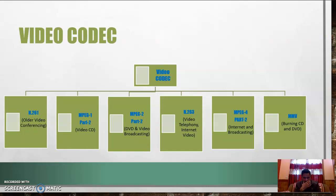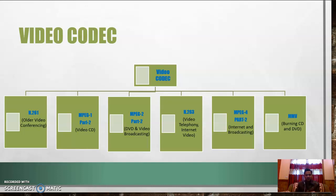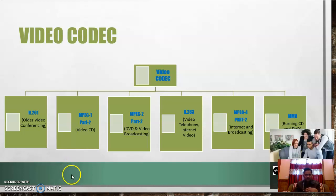Video codecs can be of six categories: H.261, MPEG-1 Part 2, MPEG-2 Part 2, H.263, MPEG-4 Part 2, and MPV. H.261 is an older video conferencing standard with poor video quality. MPEG-1 is better quality, used for video CDs. MPEG-2 Part 2 is used for DVDs and video broadcasting. H.263 is used for video telephony and internet videos. MPEG-4 Part 2 is used for broadcasting and internet services and requires a good-quality network. MPV is used for burning CDs and DVDs on a computer system.